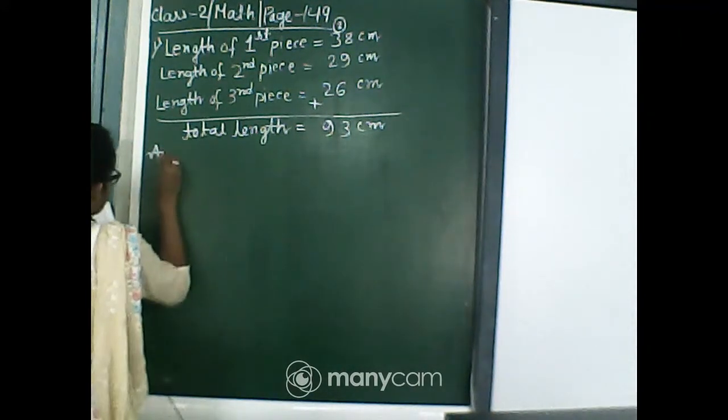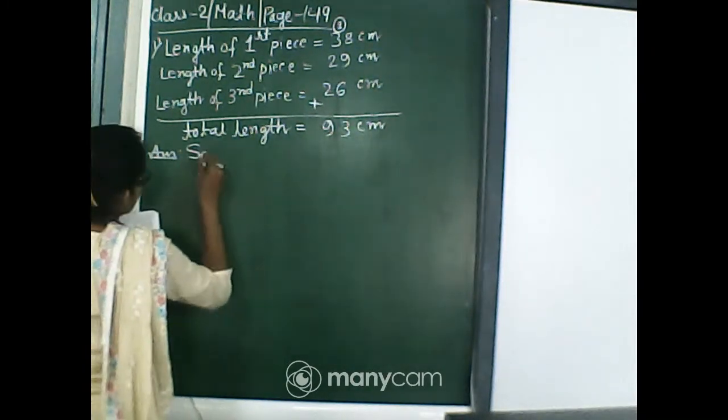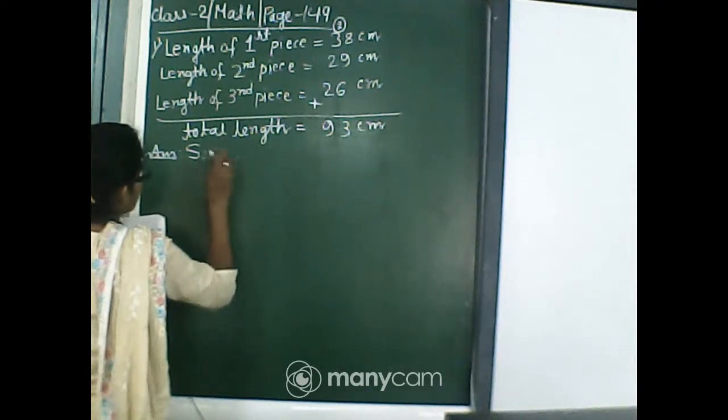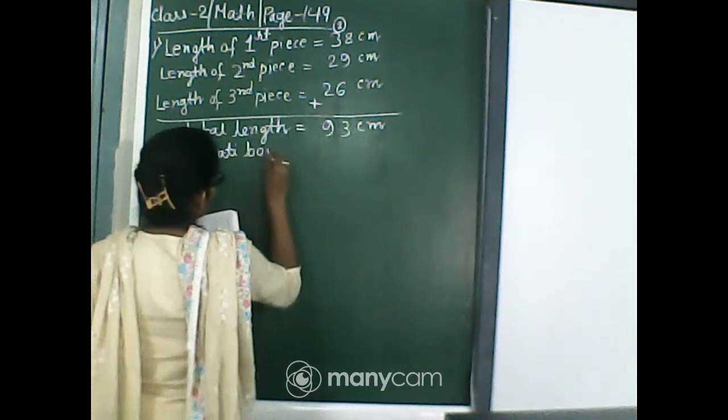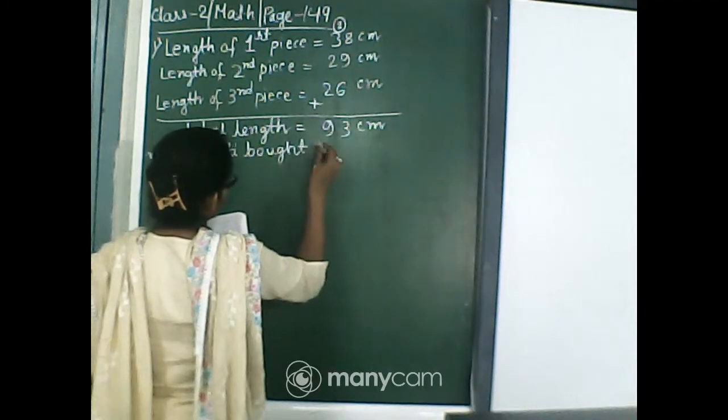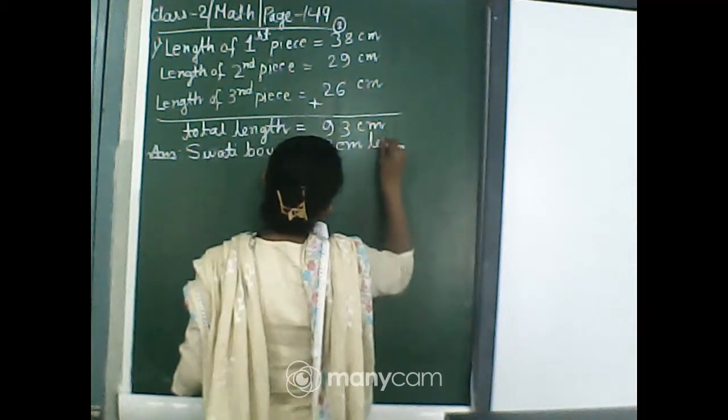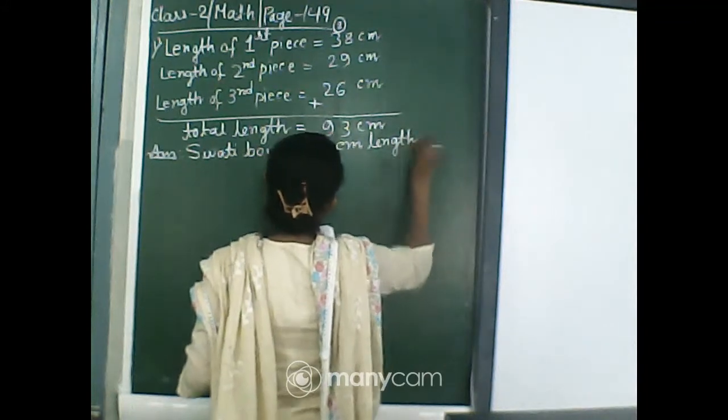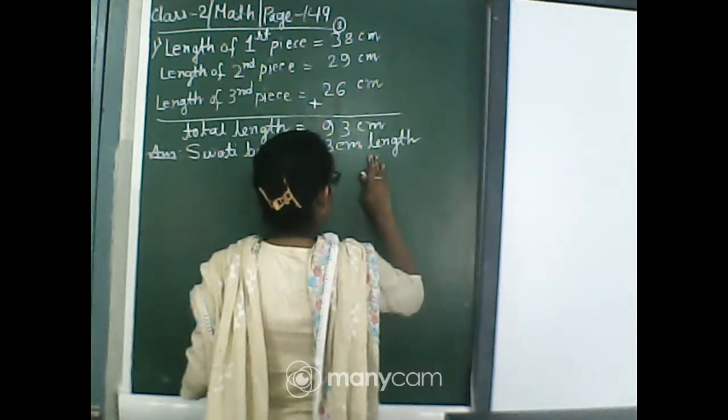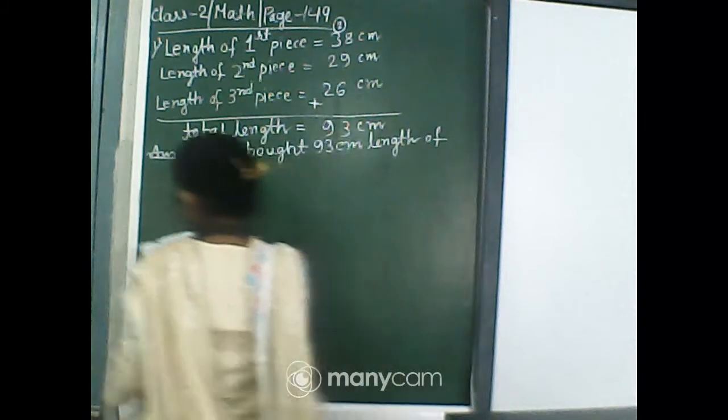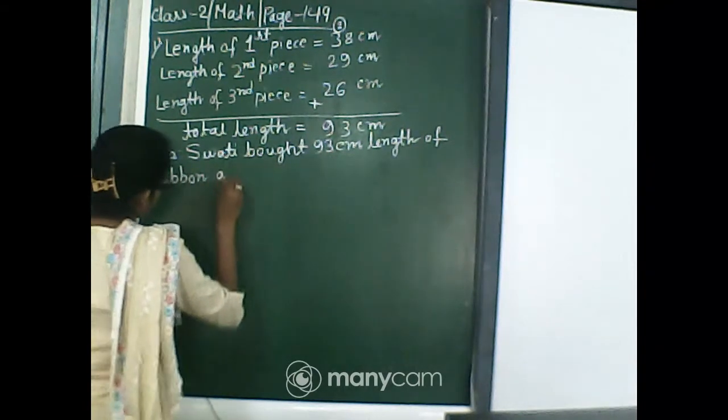So the answer is: what length of the ribbon did she buy altogether? You can write Swati bought 93 cm length of ribbon altogether.